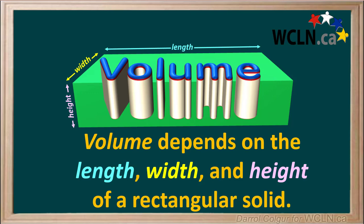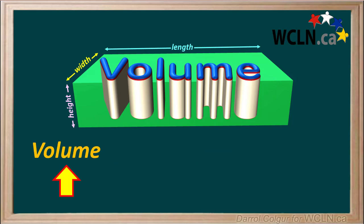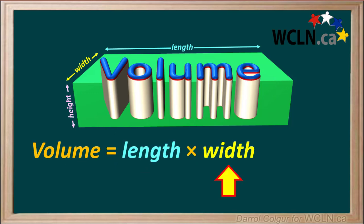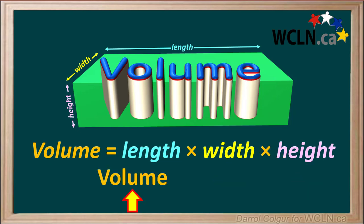The volume of a rectangular solid depends on its length, width, and height. Volume is calculated by taking the length times the width times the height. Or we can use the equation volume equals L times W times H.